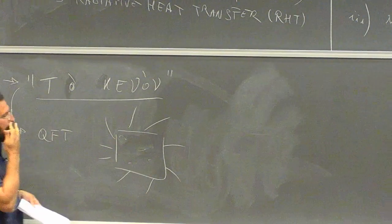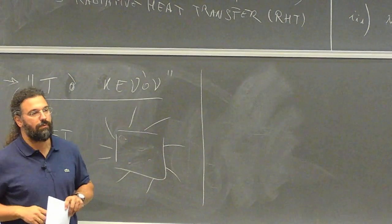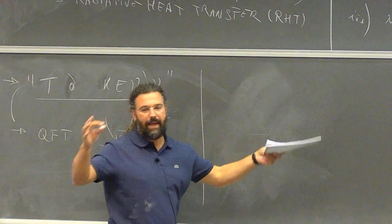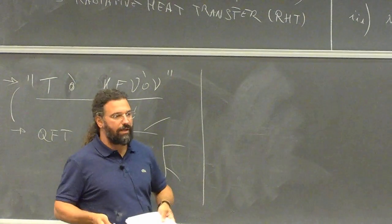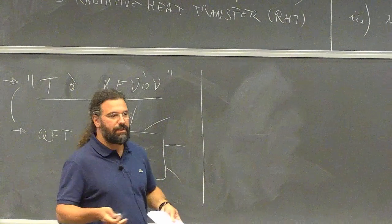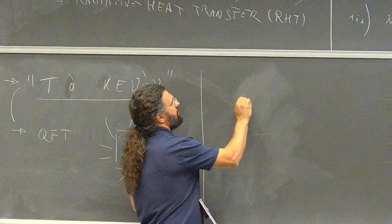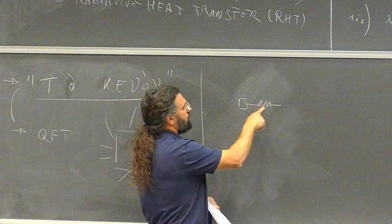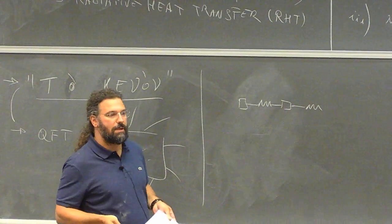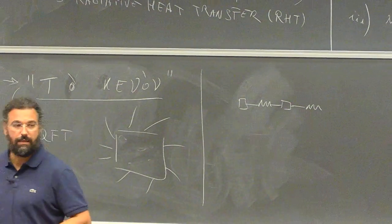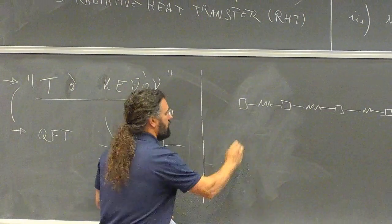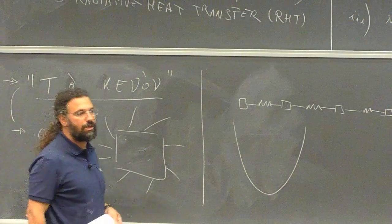In quantum field theory, the description is not in terms of particles but in terms of fields. You can imagine that your space is filled with fields of different kinds — a field for electrons, a field for photons, a field for any particle. The description of these fields is like harmonic oscillators: in space you have a mass connected to a spring, and another mass and another spring, and so on. These coupled harmonic oscillators are used in quantum field theory to describe the fields.